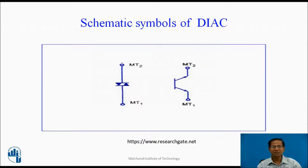These are the schematic symbols of the Diac. The first one represents the antiparallel connection of two diodes, and the second represents a transistor without base. MT1 is main terminal 1, MT2 is main terminal 2 — these are the two terminals of the Diac.